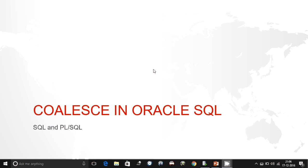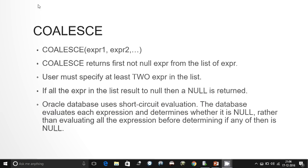Hello guys, my name is Kishan and today we are going to understand the COALESCE function in Oracle SQL. In this COALESCE function we will be passing a number of expressions — you can pass n number of expressions to it. The COALESCE function returns the first non-null expression from the list of expressions that we have provided.